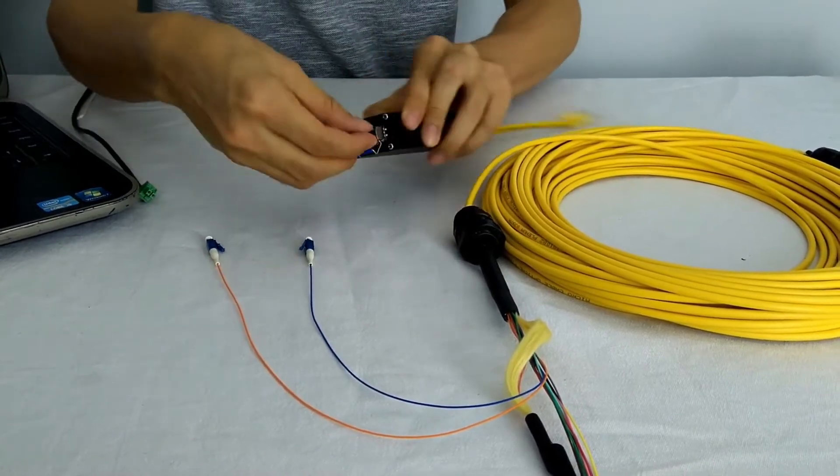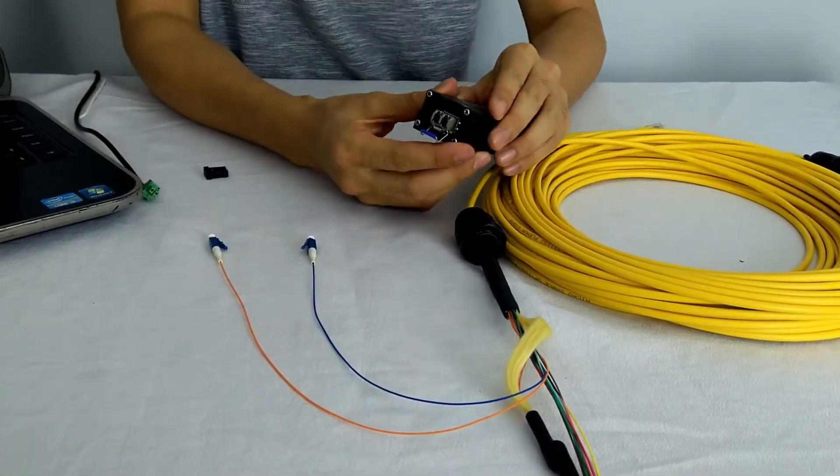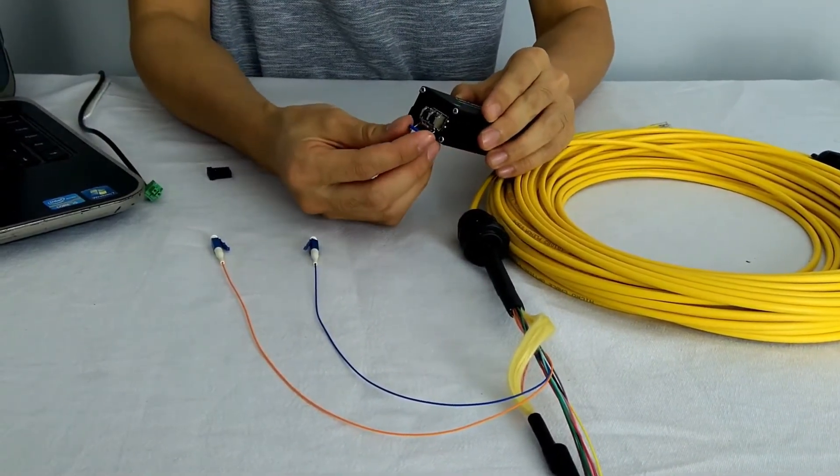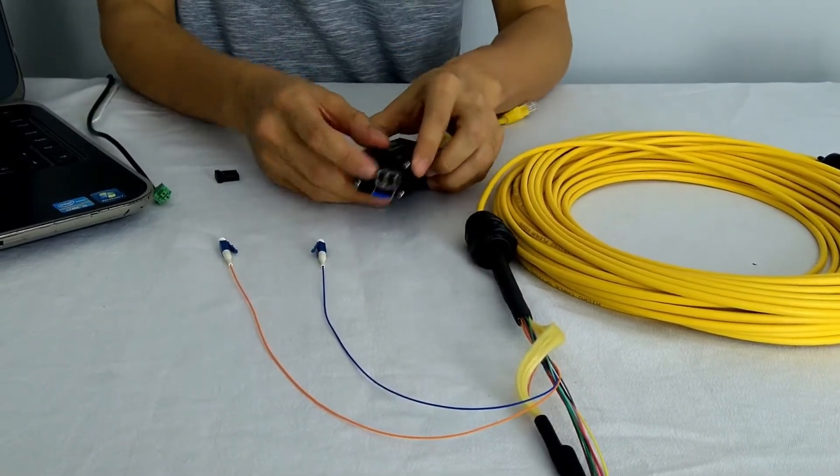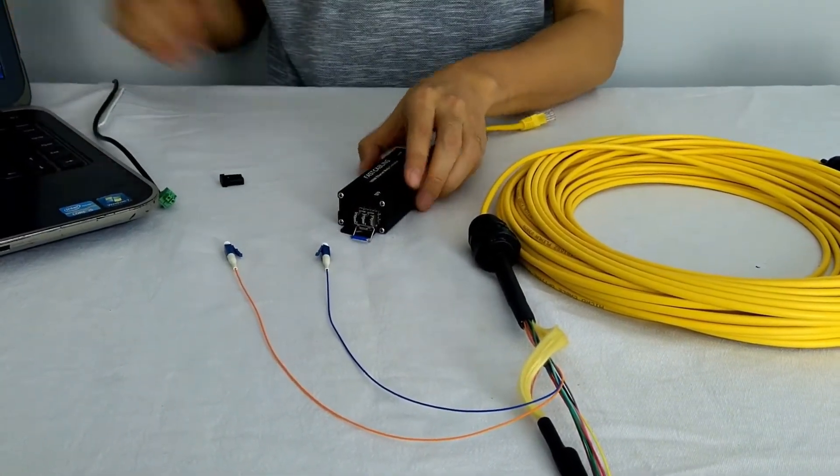This is the SFP module. SFP will convert the light to electronic signal. We are using the duplex SFP, so the transmitting and receiving using a different path.